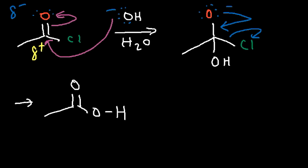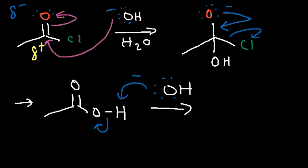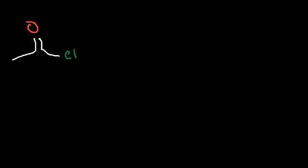Now, under basic conditions, the carboxylic acid will not remain in its protonated form. Another hydroxide ion is going to immediately get rid of this hydrogen, producing water. So therefore, we're going to get the carboxylate ion under basic conditions.